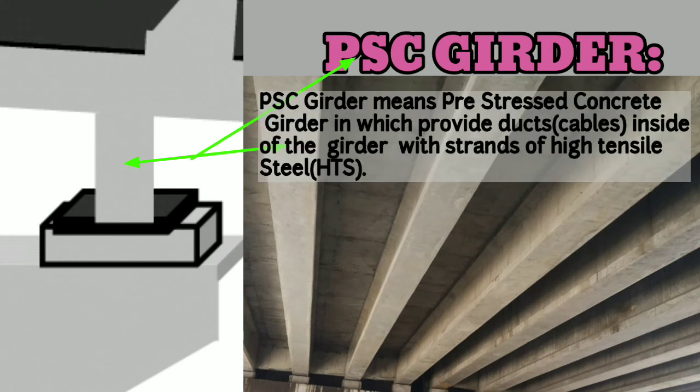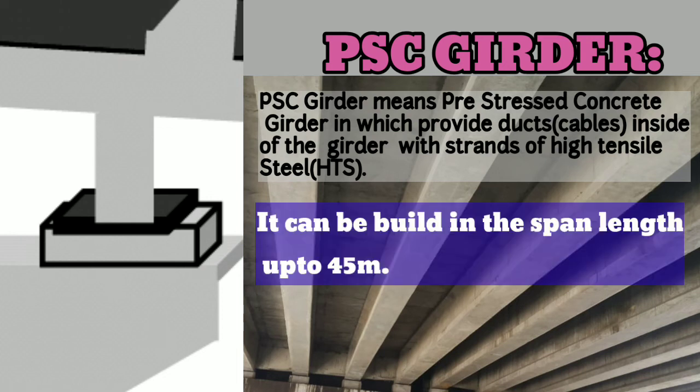Now, PSC girders — pre-stressed concrete girders — in which ducts are provided, meaning cables inside the girders with strands of high tensile steel. PSC girders can be built for a span length of up to 45 meters.